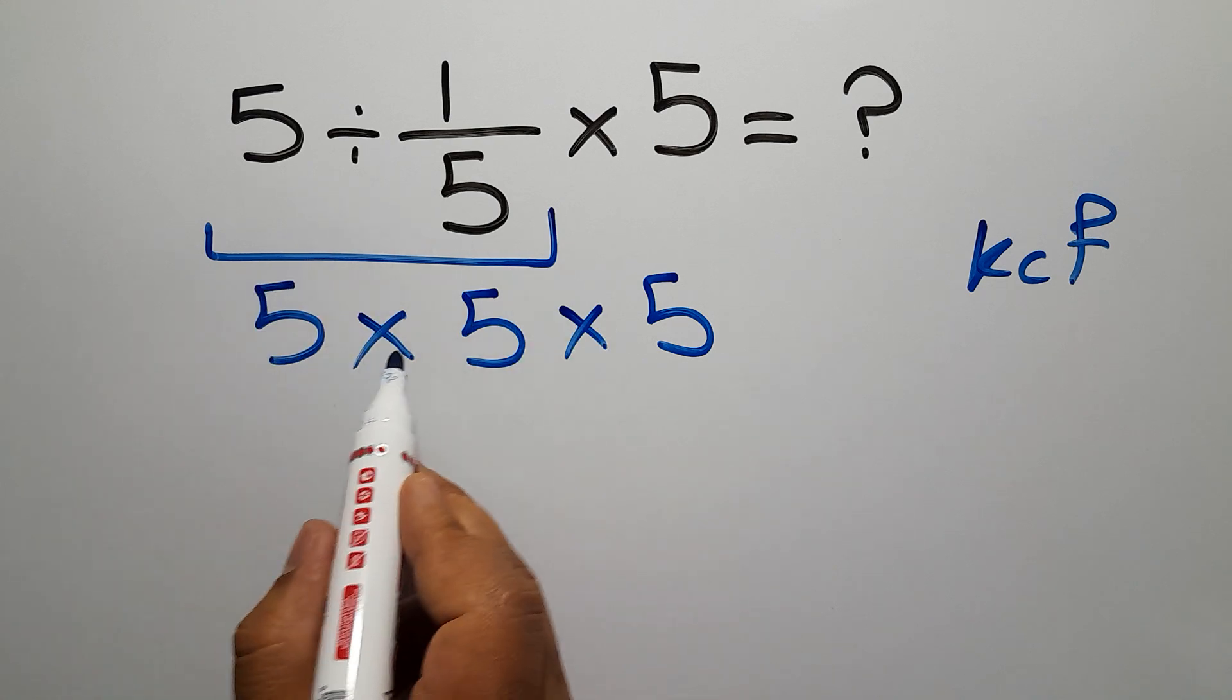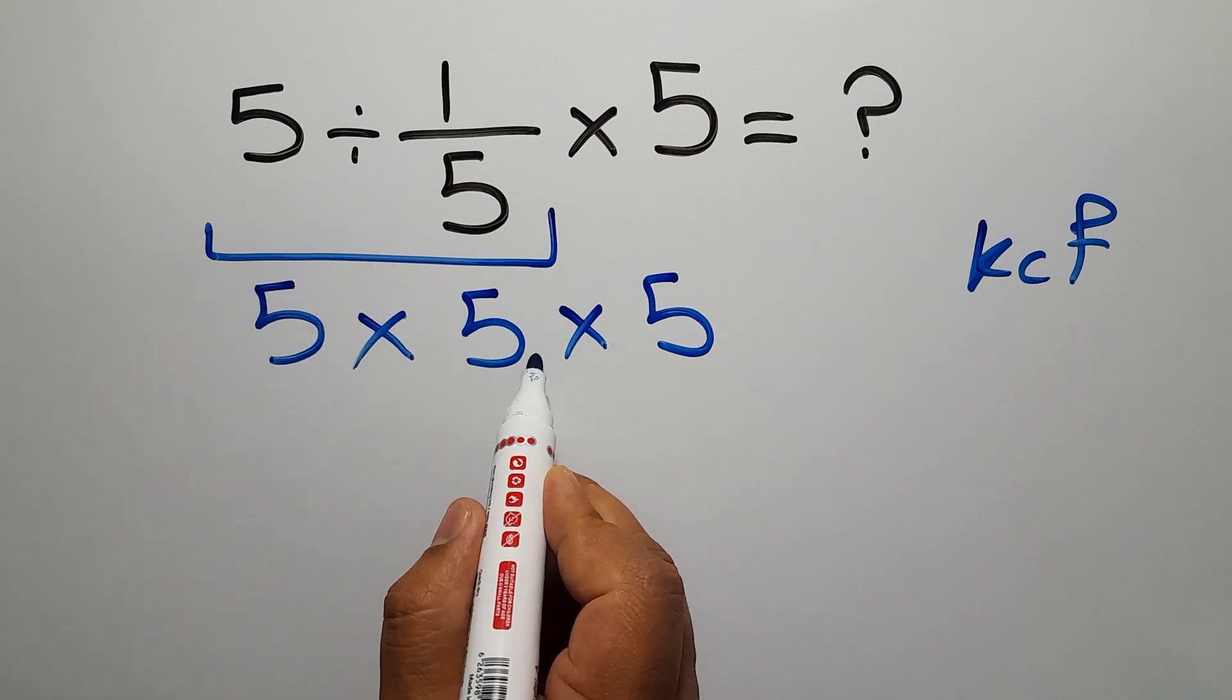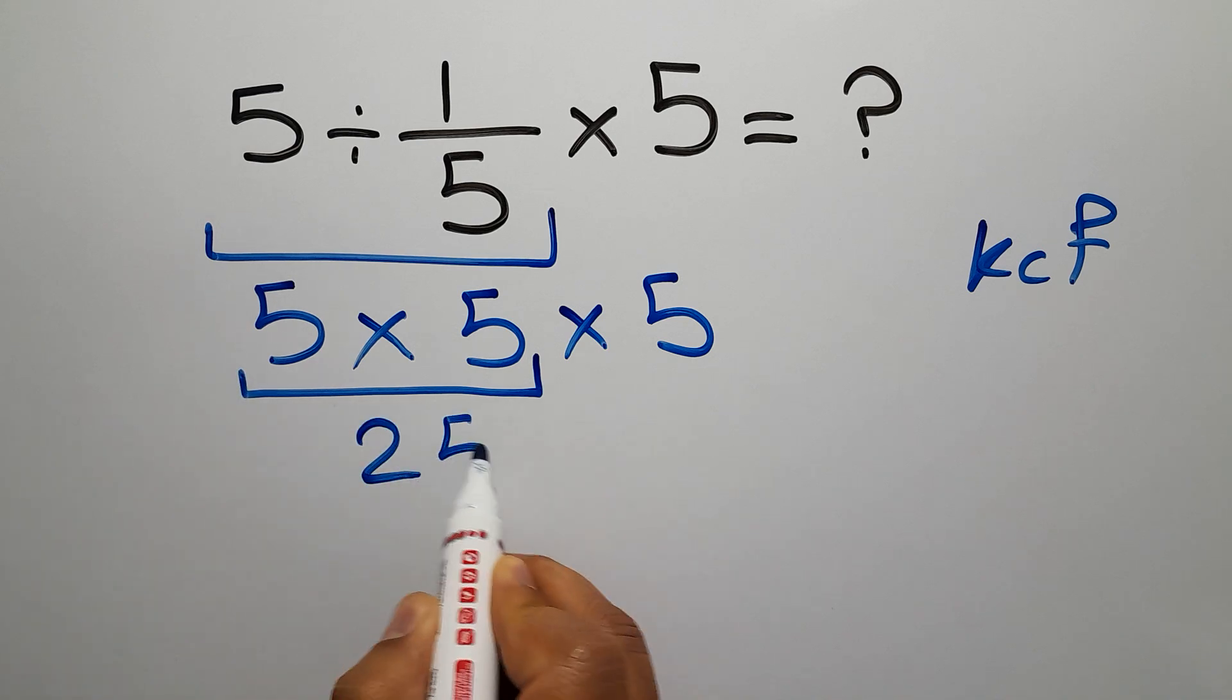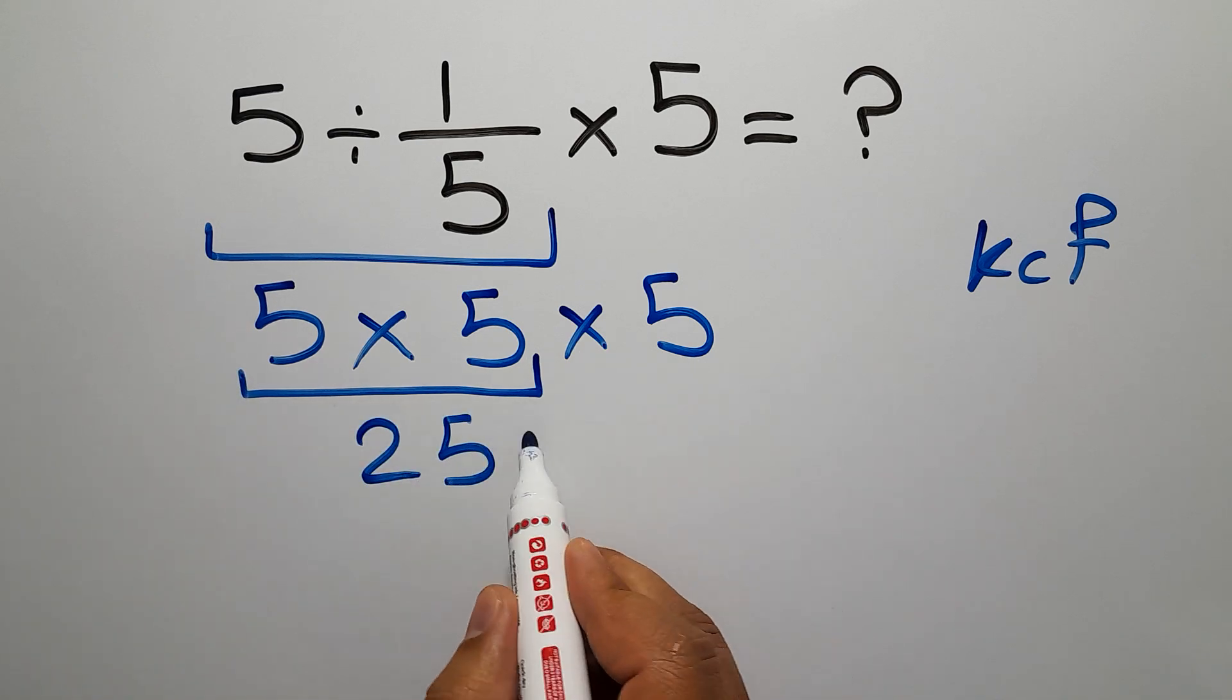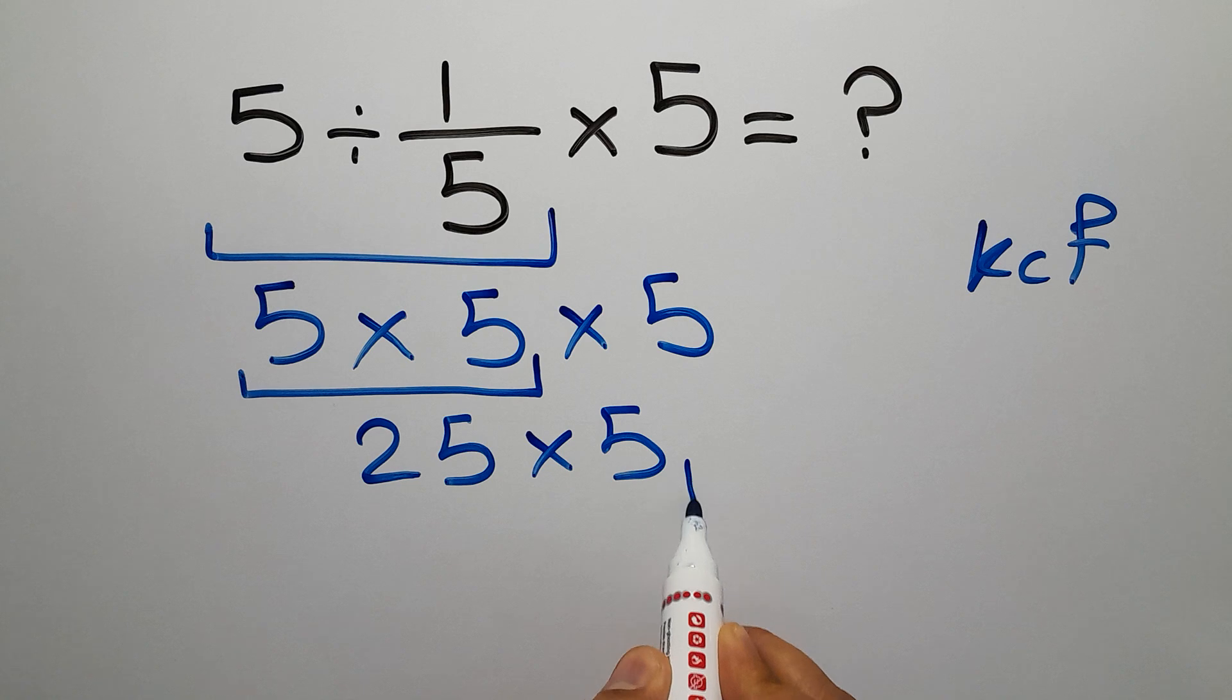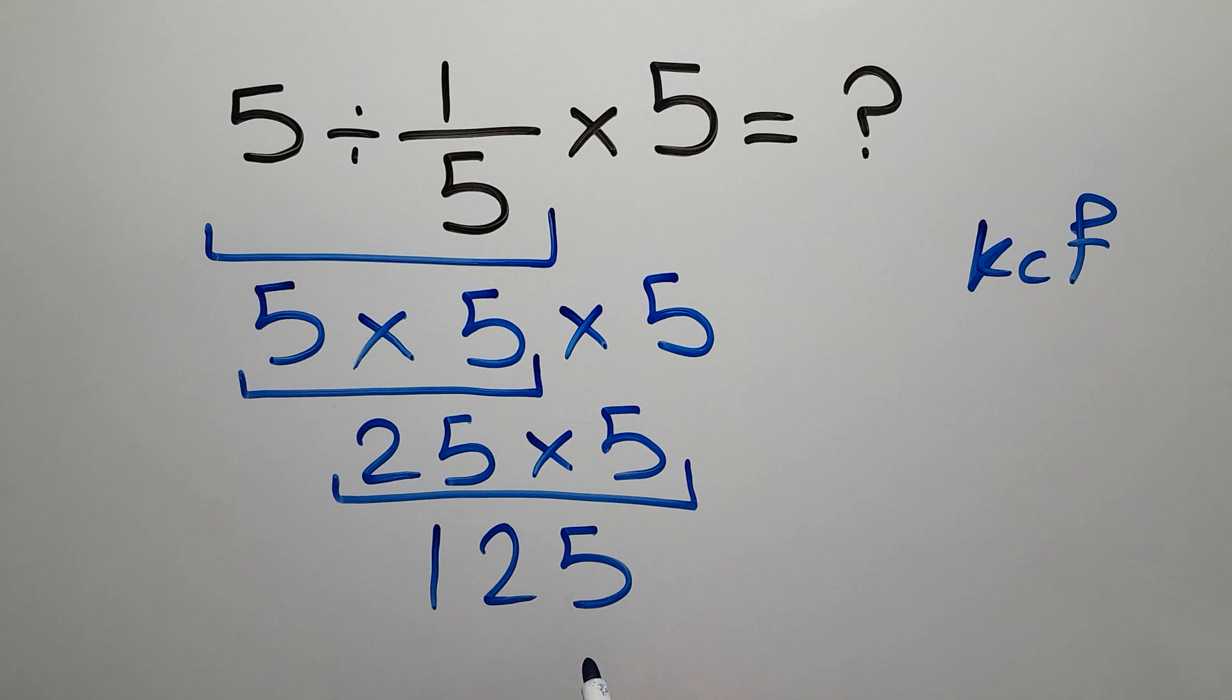5 times 5 gives us 25, so 25 times 5 equals 125. Therefore, our final answer to this problem is 125.